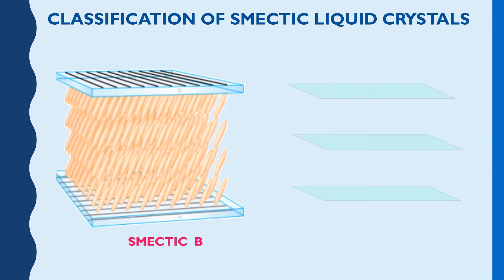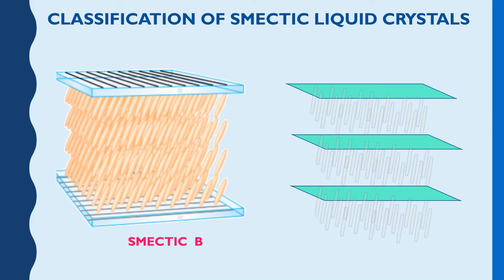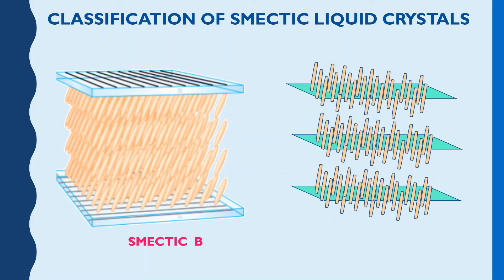So, what happens basically here, the molecules, they arrange themselves in these layers or planes, they are not at an angle of 90 degrees to the plane in which they are arranged. But, however, they are tilted a bit to a certain angle with respect to the plane in which they are arranged. This is smectic B type of liquid crystal.